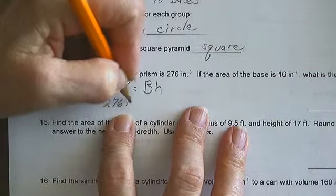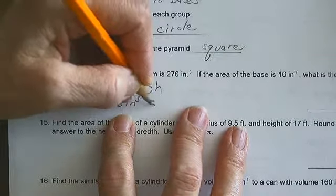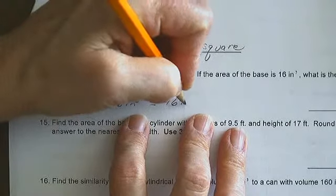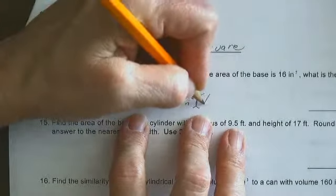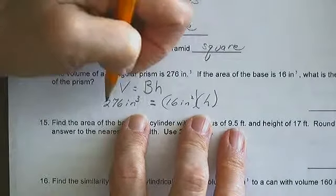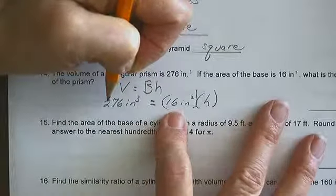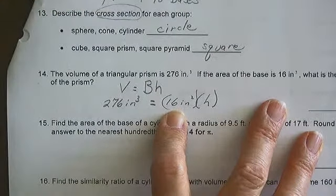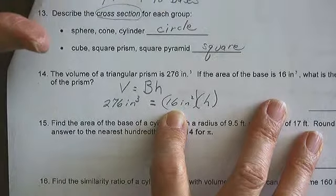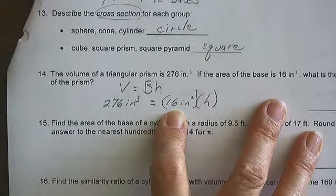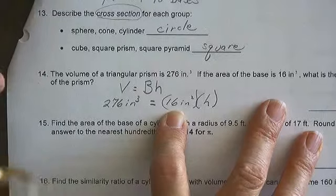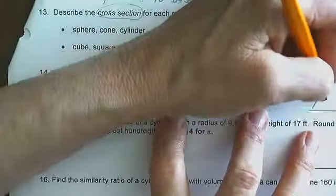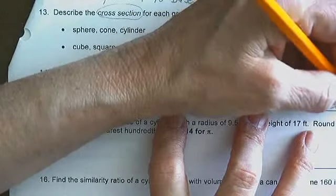So, 276 cubic inches is the base times the height. Divide both sides by 16 square inches and we find that 276 divided by 16 gives me 17.25 inches.